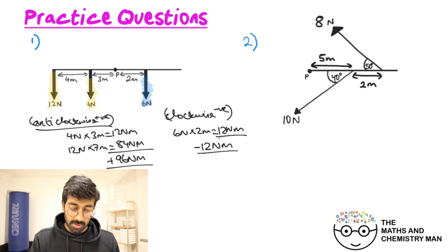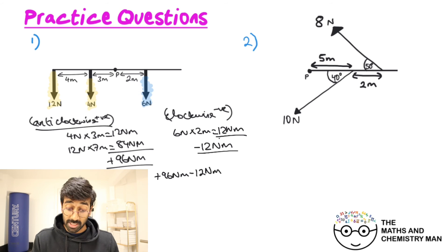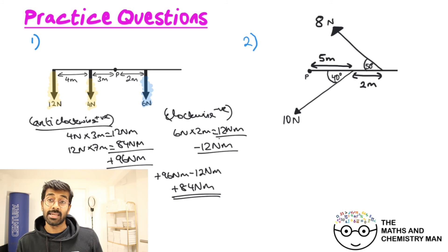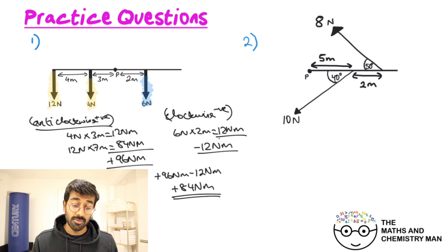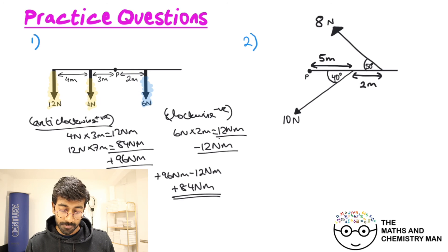To find the resultant moment: positive 96 Newton meters plus negative 12 Newton meters equals positive 84 Newton meters. The positive sign indicates it is rotating in the anti-clockwise direction. Hopefully you all got that for question one.